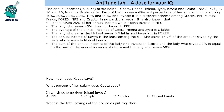Hello everyone, welcome to Aptitude Jab. This is a caselet: there are six ladies whose annual incomes are given. They save different percentages of their annual income and invest in different schemes — stocks, PPF, mutual funds, forex, NPS, and crypto — in random order. Using the given conditions, we need to find out who invests how much in which scheme. We'll call the six ladies G, H, I, J, K, and L.